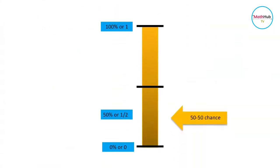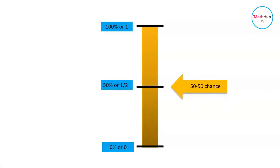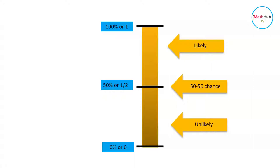Events that have a 50-50 chance have a probability of 50% or 1 half. The closer the probability of a given event is to 1, the more likely the event will occur, while the closer the probability of a given event is to 0, the less likely the event will occur.